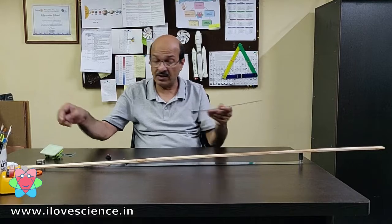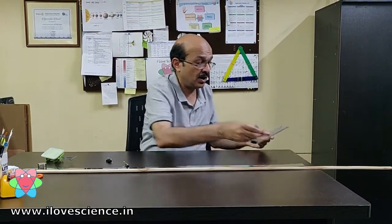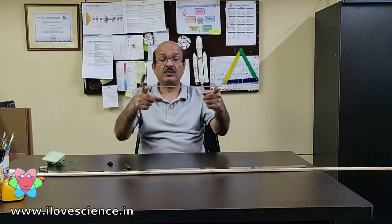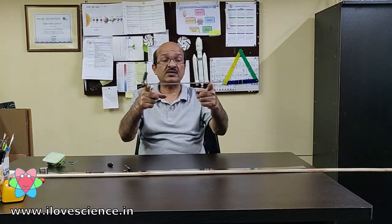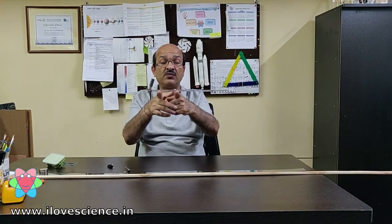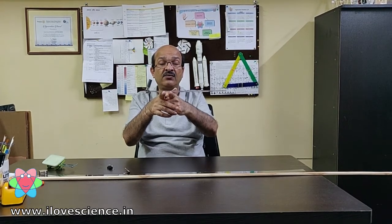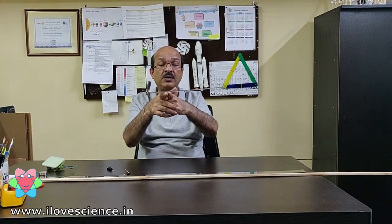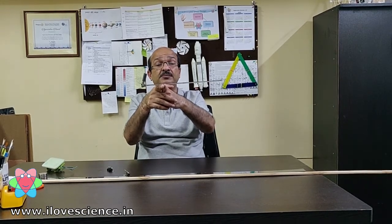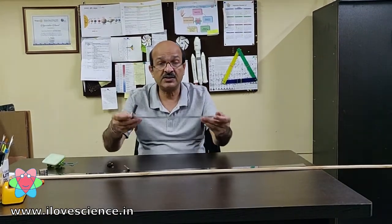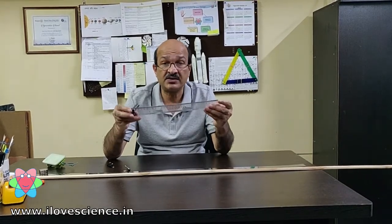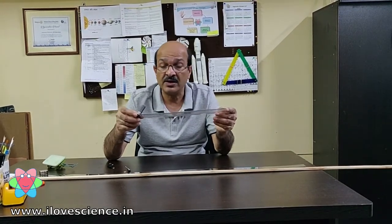You can also do it on a ruler. I have a scale here — I am adding some magnets to make it unbalanced. Now when I move my fingers, it will automatically come to the center of gravity of this scale, and without making it fall, I will be able to balance it on my fingers. It's a very interesting concept which explains many physics concepts like center of gravity and friction.